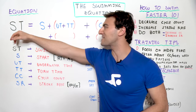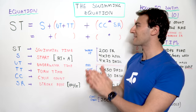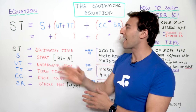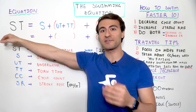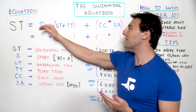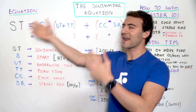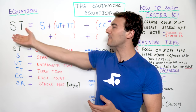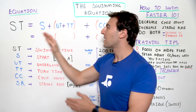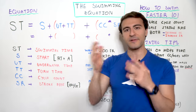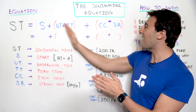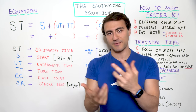Let's break it down. We have ST, that represents our swimming time. Like any equation, we have one element on one side — that's the result we're going to solve for, our swimming time. Then we have a few different variables that make up that end result. And if we want to make the end result faster — so we want to make this number lower — we're going to be able to tweak a few different variables and focus selectively on them to actually swim faster.